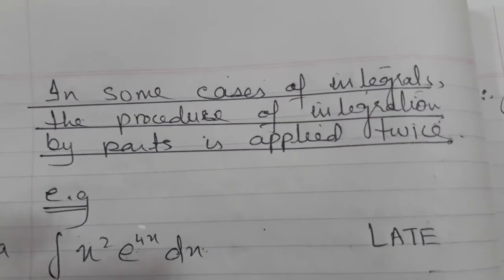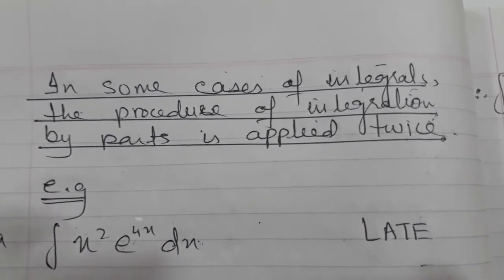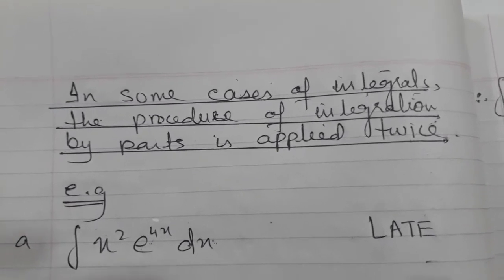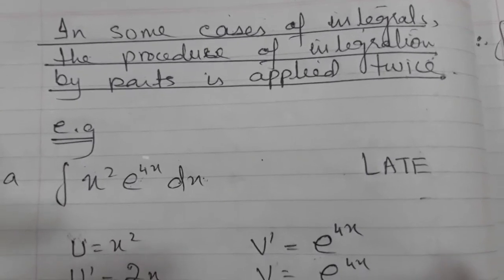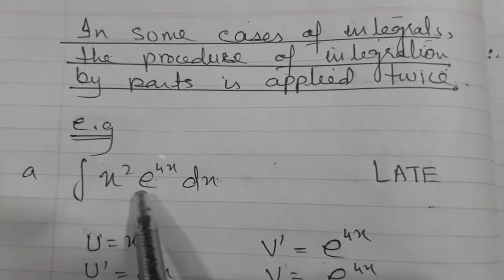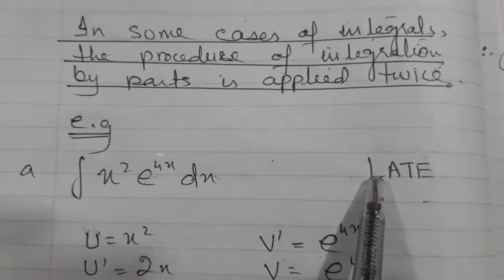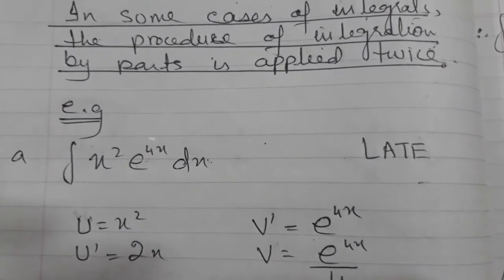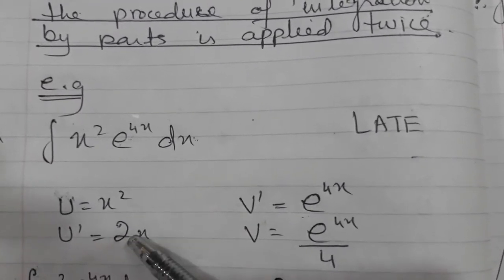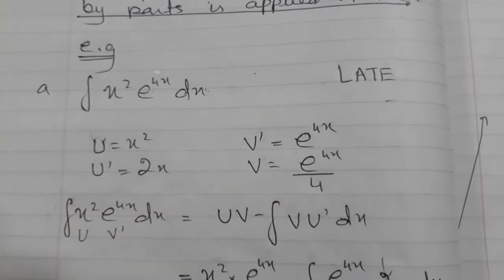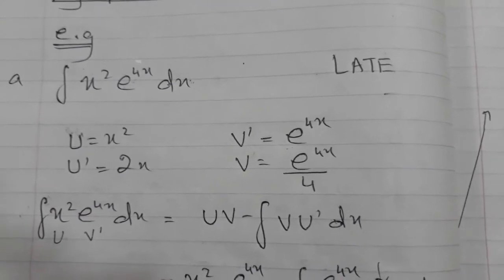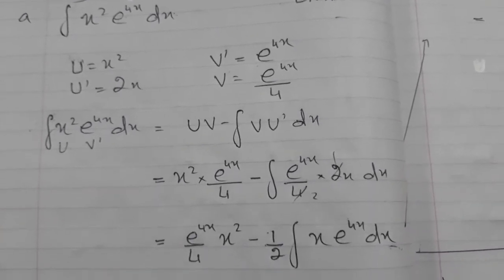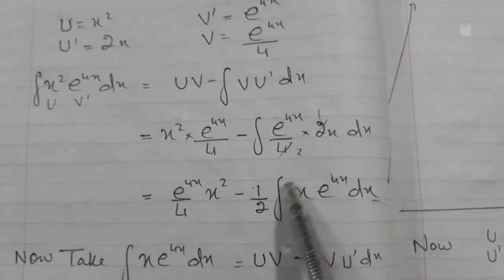There are two cases in which integration by parts is applied twice. These are very important and students should practice them and keep in mind that these cases can come up — one application of IBP will not complete the integration. So let's see the first case. Looking at the two functions and applying LATE: log is not present, algebra is present, so my u is x². What is left is my integrated function v'. I differentiate x² and integrate the exponential, which we all know. After substituting in the formula, I end up with a product of two functions again.